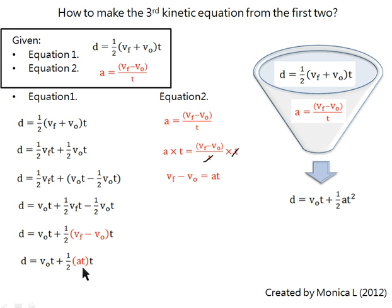Next, we substitute at for vf minus vo, which we got from the second equation. Then we combine t into t squared, and that gives us the third kinetic equation: d equals vo t plus half a t squared.